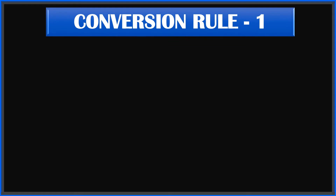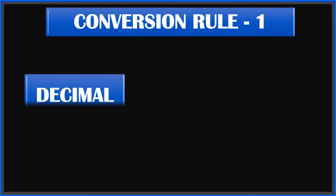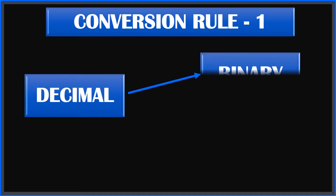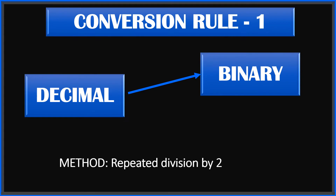Conversion rule number one, which is very important: if you convert a number from decimal to binary, then you will use the method of repeated division by two. Remember this method and conversion rule — these are very important. If you are going from base 10 to base 2, going to binary number system, you repeatedly divide by two.